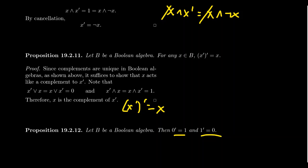This brings us to the end of lecture 38, in which we introduced distributive lattices, bounded lattices, and Boolean algebras — the equivalent of a field inside order theory. Just as a field is the most structured ring, a Boolean algebra is the most structured lattice, having all the axioms: associative, commutative, distributive, and with complements. In the next and final lecture 39, we'll classify all finite Boolean algebras.